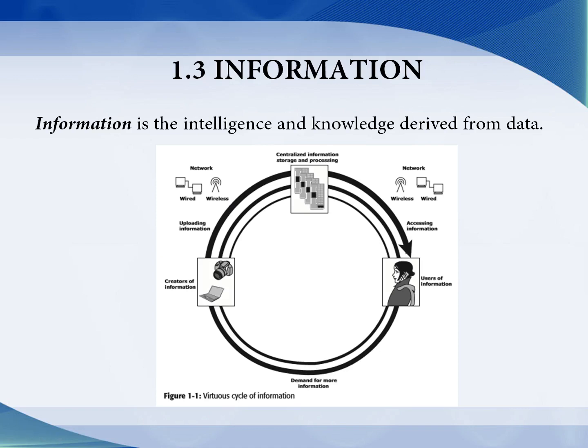The next topic is information. Information is the intelligence and knowledge that is derived from data. As already mentioned, data is not a meaningful one and information is a meaningful one. Here we see the information cycle: data is created by a camera or generated by a computer. The data creator gets value when it is shared with others, so it is uploaded to data centers. A data center is a centralized information storage and processing facility accessed through wired or wireless networks.